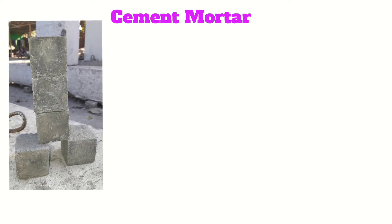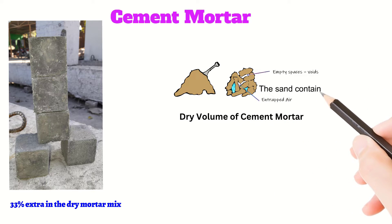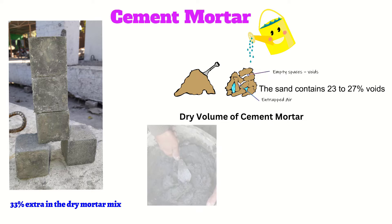In the case of cement mortar, we use 33 percent extra in the dry mortar mix. In the dry state, all the ingredients in cement mortar — that is sand and cement — are loosely packed with voids in them. Generally the sand contains 23 to 27 percent voids. After the addition of water into the dry mix, the air particles in the voids are removed and the mortar gets compacted, forming a homogeneous wet mix.